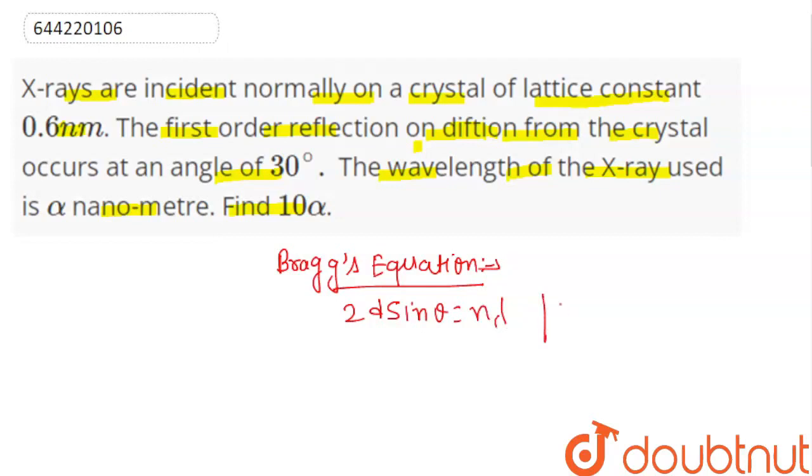And here we have the question, which is given. What is the value of d? 0.6 nanometer. And the angle theta is given, it is equal to 30 degrees. And the value of n is equal to 1, because it is the first order reflection.